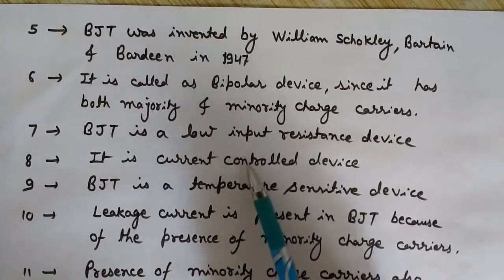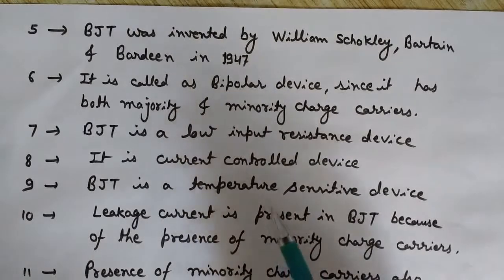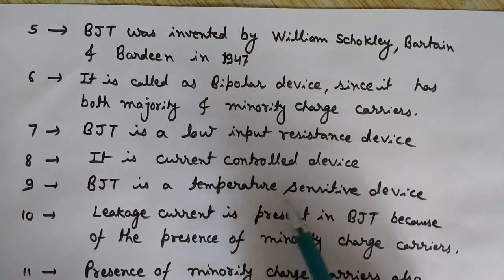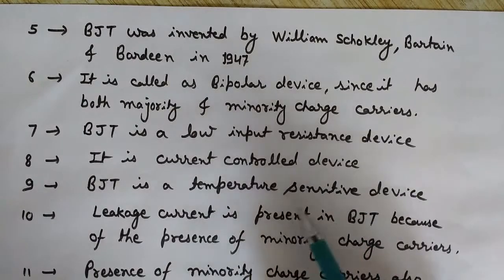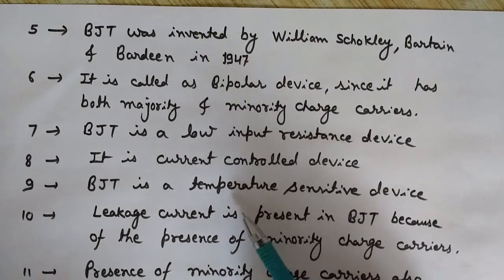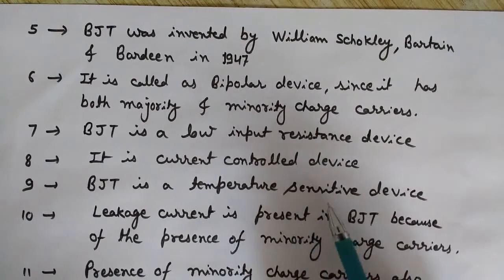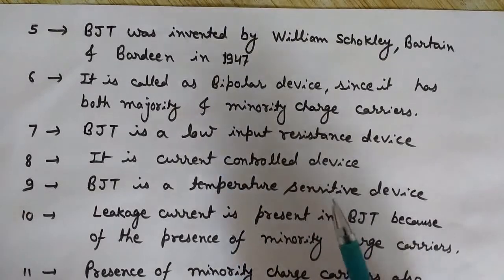BJT is a temperature sensitive device. As temperature increases, the collector current IC increases. Since beta (β) equals IC divided by IB, as IC increases the beta of the transistor also increases — so beta is temperature dependent. Additionally, with an increase in temperature, the base-emitter voltage VBE decreases, and more minority charge carriers are generated, increasing the reverse saturation current.